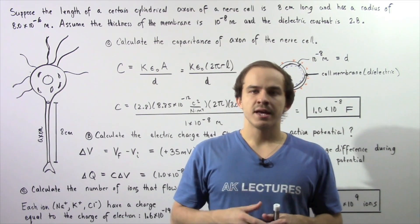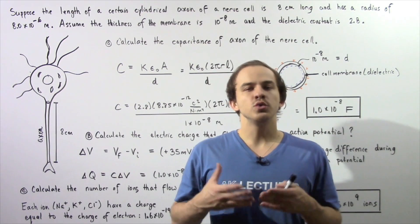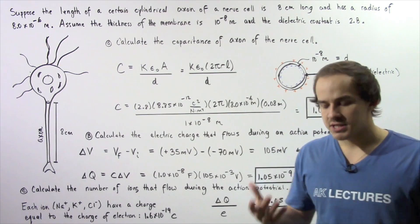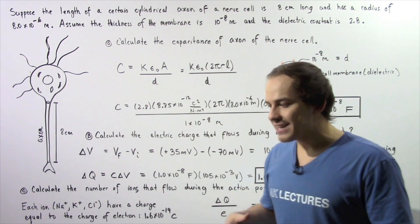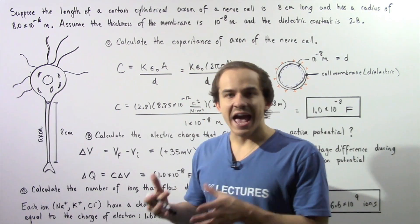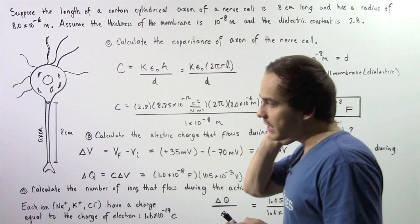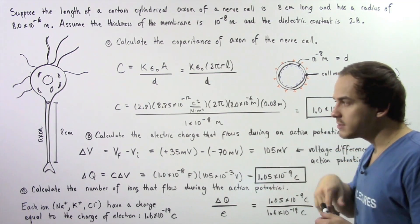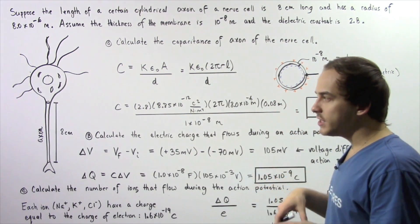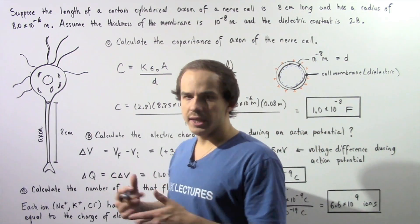In the previous lecture, we discussed how the human nervous system uses electric signals to communicate with different parts of the body. We spoke about the action potential, which is essentially an electric potential difference generated within the axon of the nervous cell. In this lecture, we're going to continue our discussion of the axon and see how we can treat it as if it were a parallel plate capacitor.